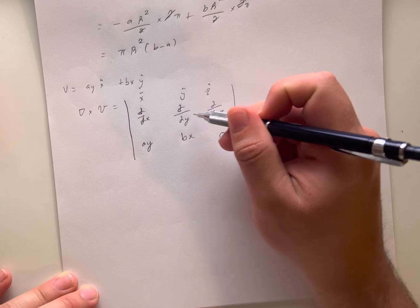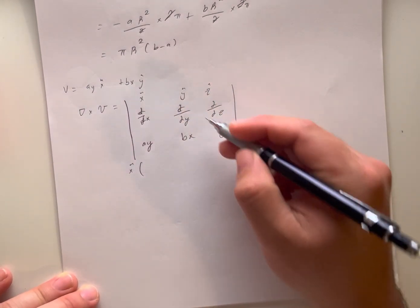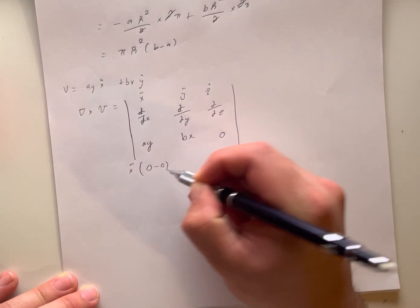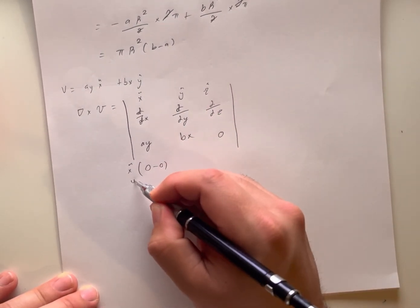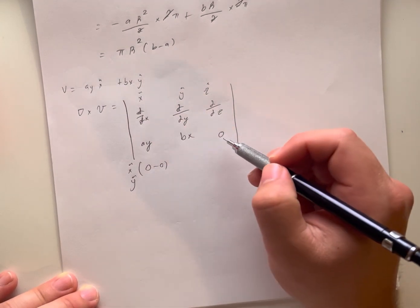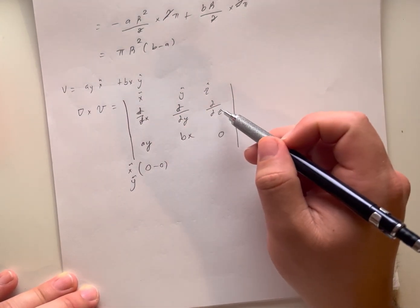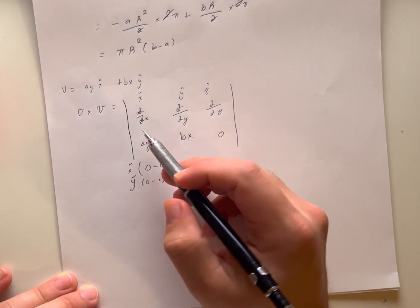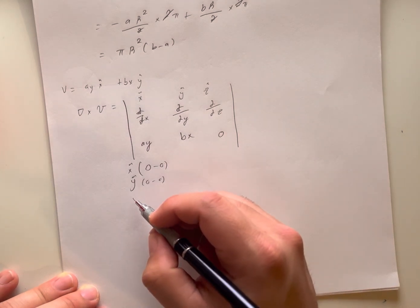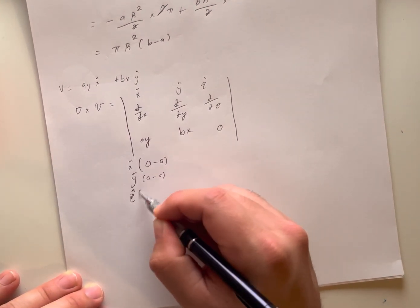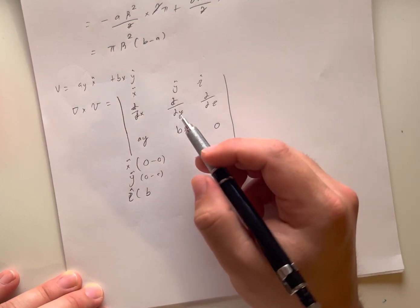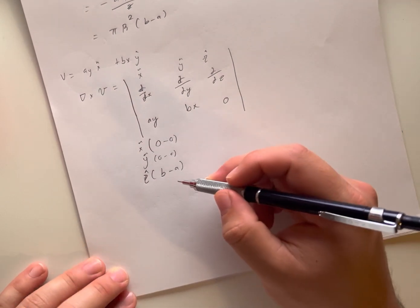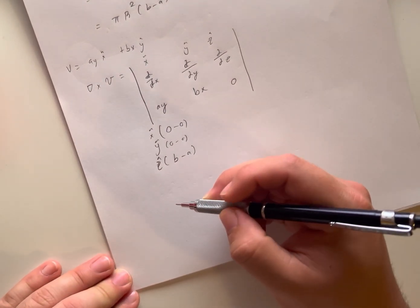For the x-hat component, we see the partial derivative of 0 with respect to y and z gives nothing. Same thing for y-hat, we have nothing. But for z-hat it's different: partial derivative with respect to x of b*x will get us b, and partial derivative with respect to y of a*y will get us a, so we have b minus a in the z-hat direction. Now that we have the curl of the vector function, we can plug it back into our equation.